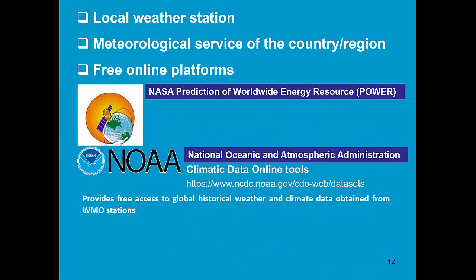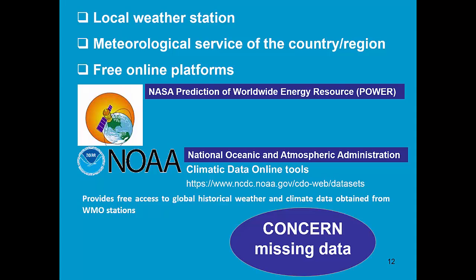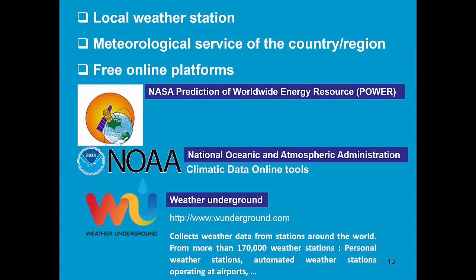Another platform is the one of NOAA. It contains historical recorded weather data, but there is a lot of data missing. Another platform is the one of Weather Underground. It has data of more than 170,000 weather stations.